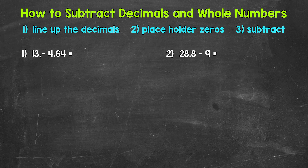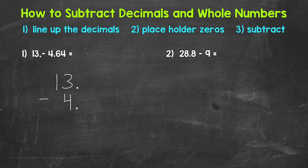Typically, if we just have a whole number, we write it without a decimal point. But here we are using the decimal point to line up the problem, so we are including it. Now we can set this up: 13 decimal point minus 4 and 64 hundredths.